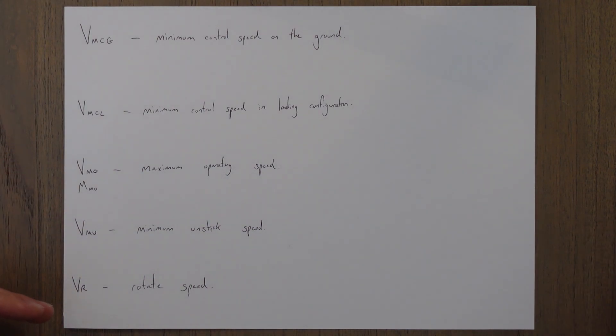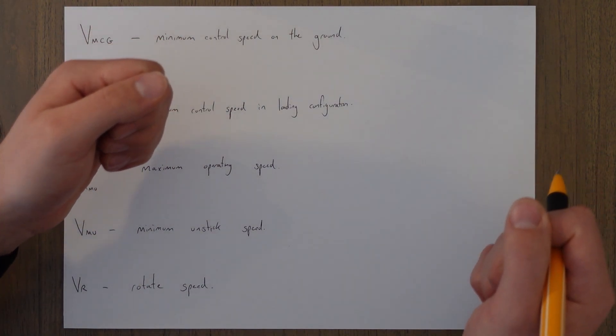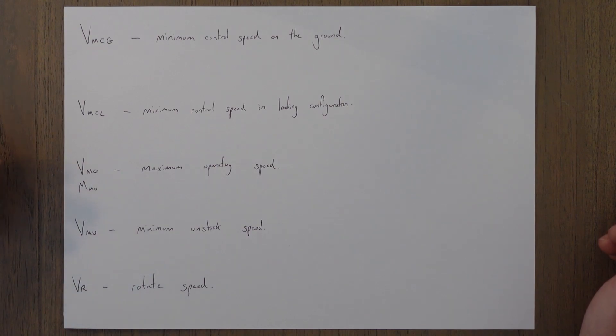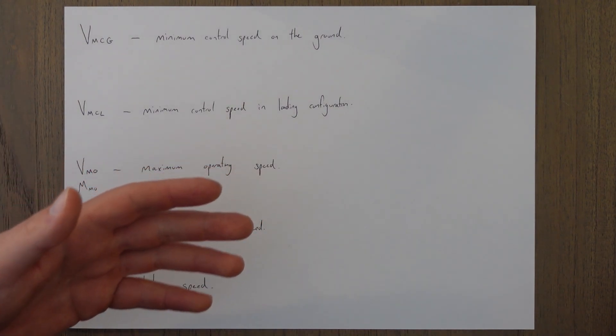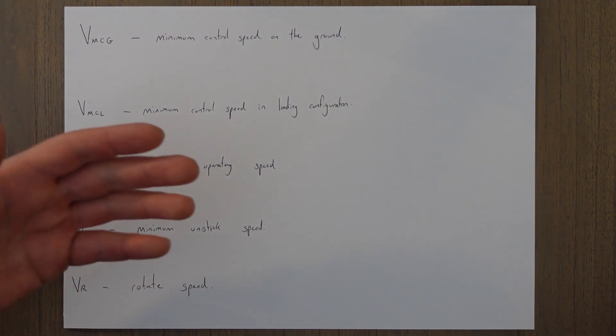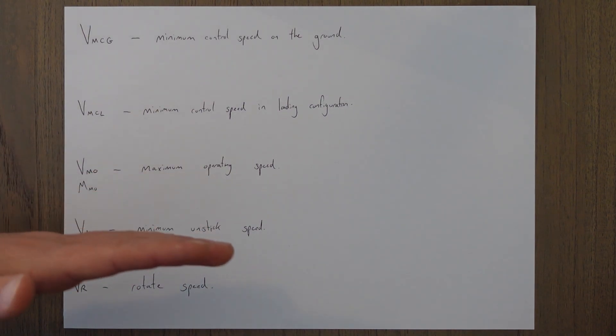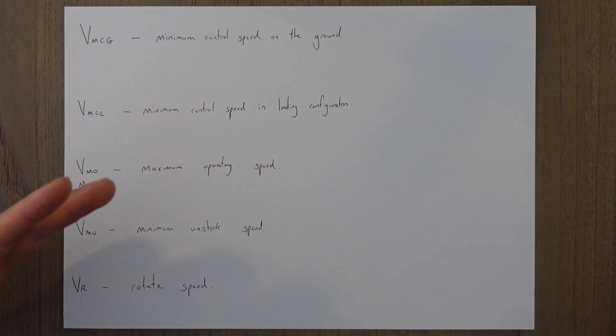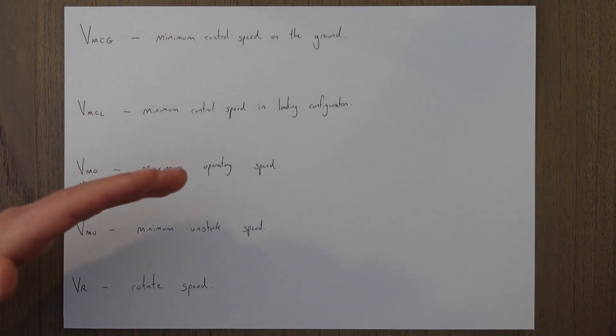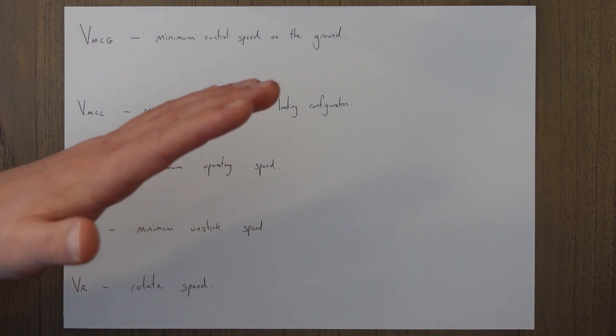VR is our rotation speed. This is the speed at which the pilot begins to apply aft control pressure to cause the aircraft nose to pitch up, after which it will leave the ground, and this will always be at or above V1 because at V1 we commit to the takeoff and as soon as we start rotating we're very committed to takeoff. We can't reject the takeoff anymore and then slowly after we pass VMU and VLOF as both of the main wheels come off the ground as well as the nose wheel.